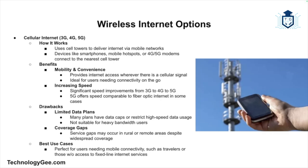Next, let's talk about cellular internet. Cellular internet uses cell towers to provide internet access via mobile networks. The user's device — such as a smartphone, mobile hotspot, or 4G/5G modem — connects to the nearest cell tower for internet access. The benefits include mobility and convenience: cellular internet is highly mobile and available wherever there is a cellular signal, making it perfect for users who need internet access on the go.